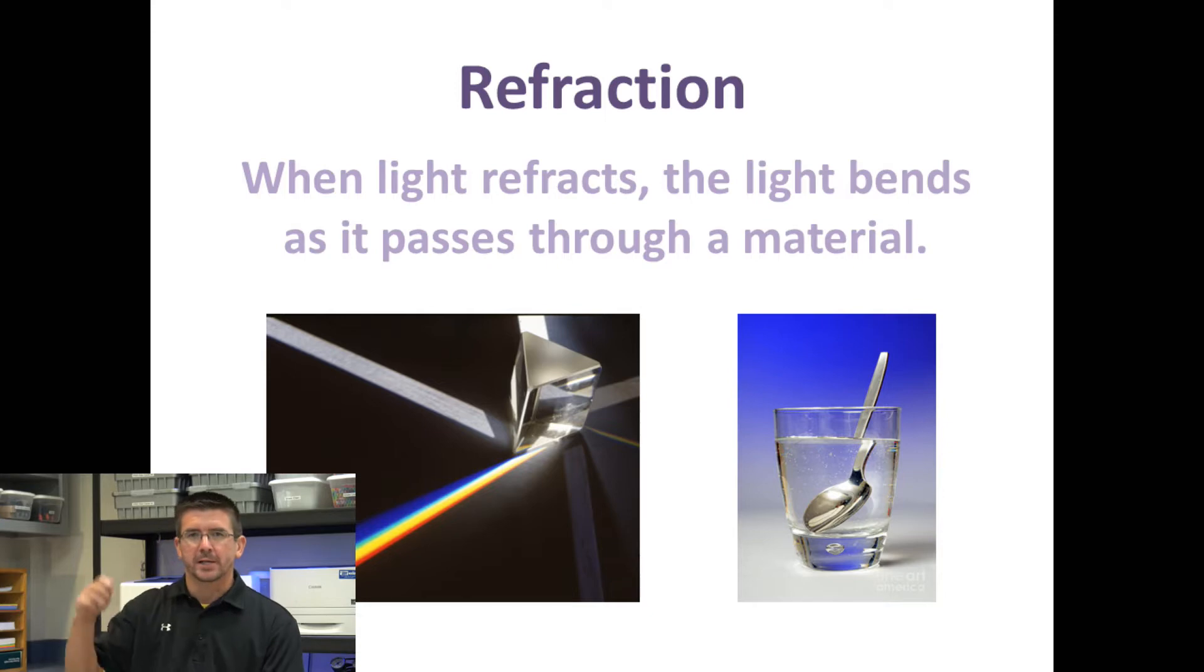You might also notice if you take a spoon and set it in a glass of water, the spoon looks almost detached from the handle that's sticking out because the light as it passes through the water is refracting and it makes you see it a little bit different. Sometimes it looks a little magnified or at a different angle because light is being refracted or bent.